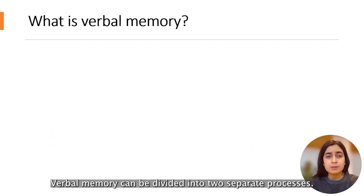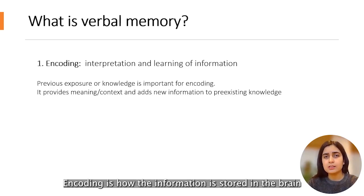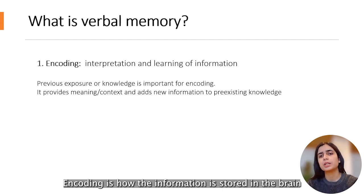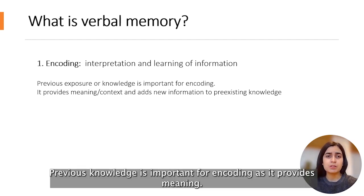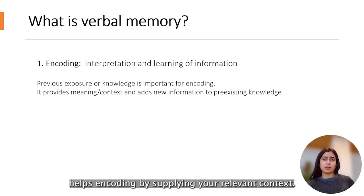Verbal memory can be divided into two separate processes. First, there is encoding. Encoding is how the information is stored in the brain for the first time. Previous knowledge is important for encoding as it provides meaning, and pre-existing knowledge helps encoding by supplying relevant context.